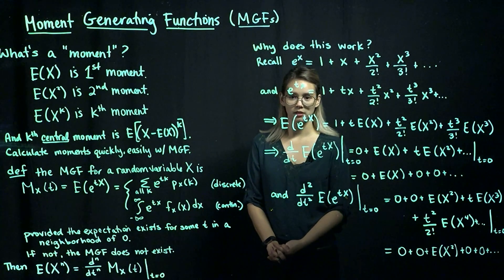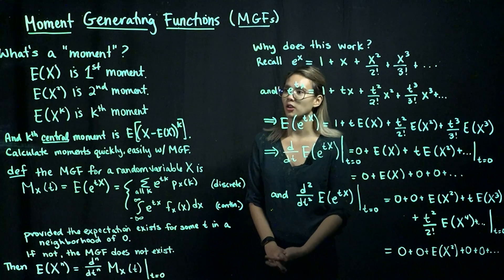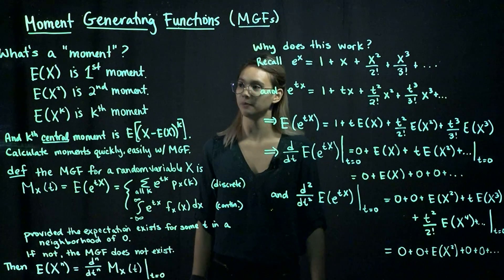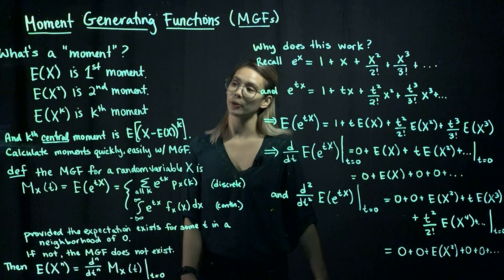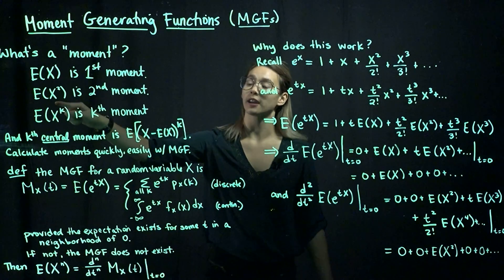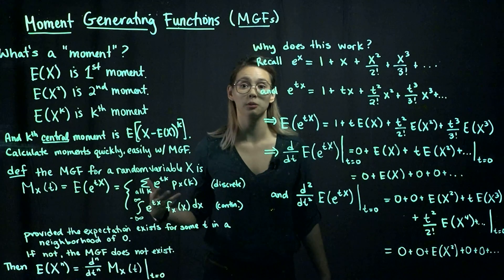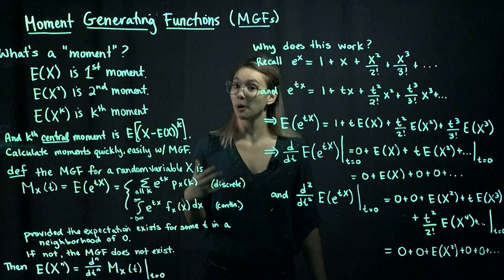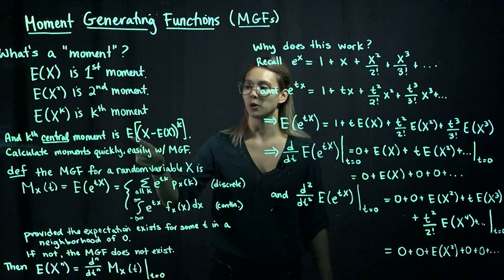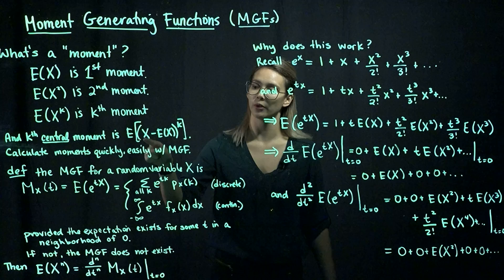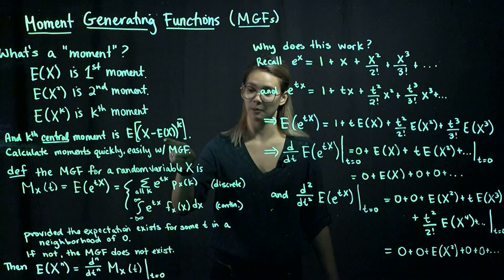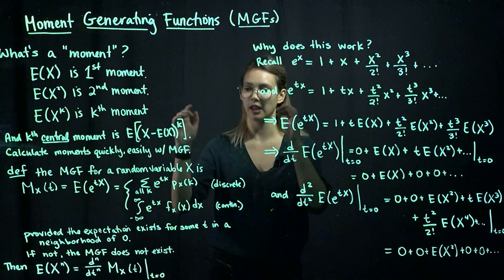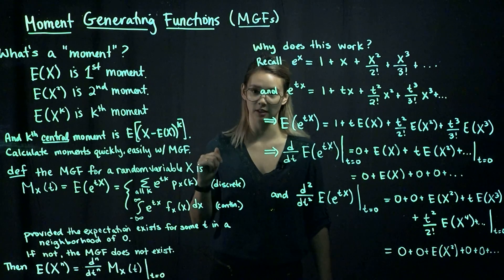So what's a moment? It's related to an expectation. If we want to know what the first moment of a random variable is, we just take the expected value of that random variable. If we want the second moment of a random variable x, that is the expected value of x squared. More generally, we can look at the kth moment, and that would be the expected value of x to the k. Also useful is central moments. When you have a central moment, we have a random variable minus its expected value, so the kth central moment would be the expected value of the kth power of (x minus the expected value of x).